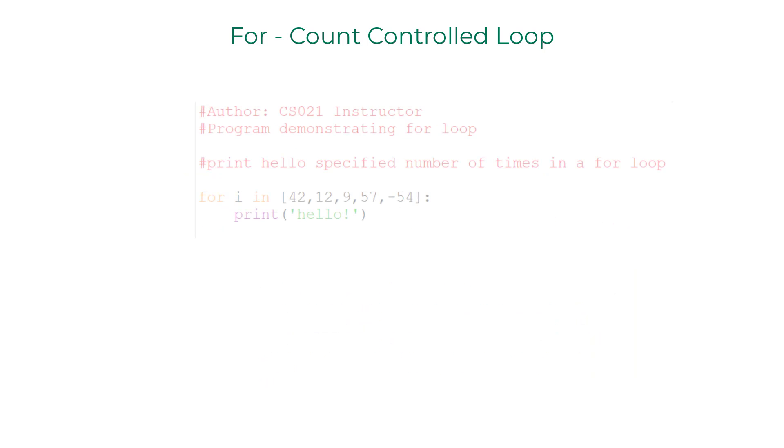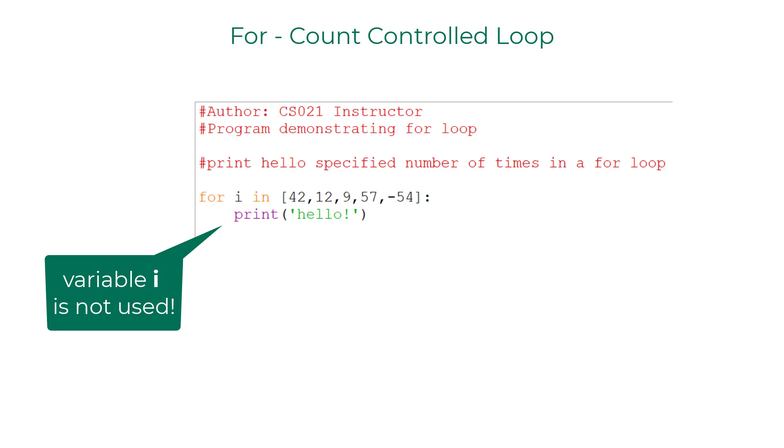Now I need to mention this about a for loop. You need not use the iterator variable inside your loop. If I want to print hello five times I could do that by entering any five values here in the list.